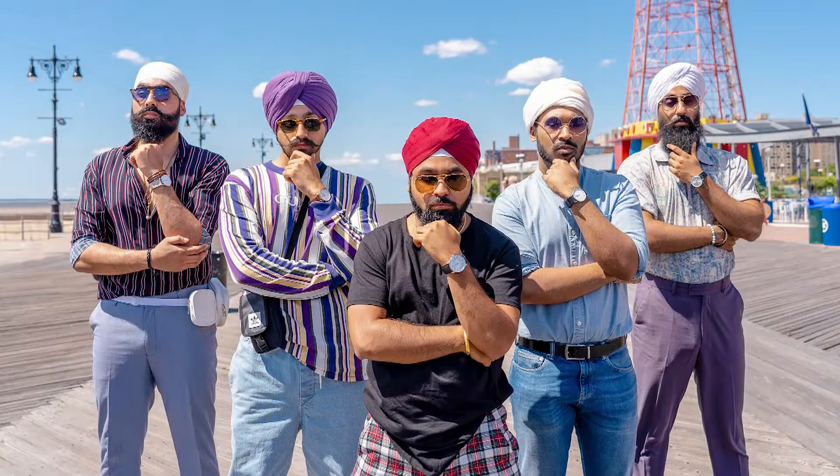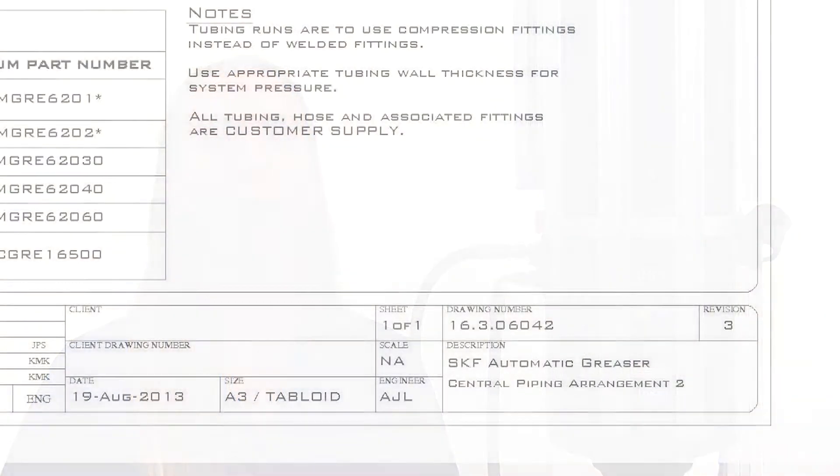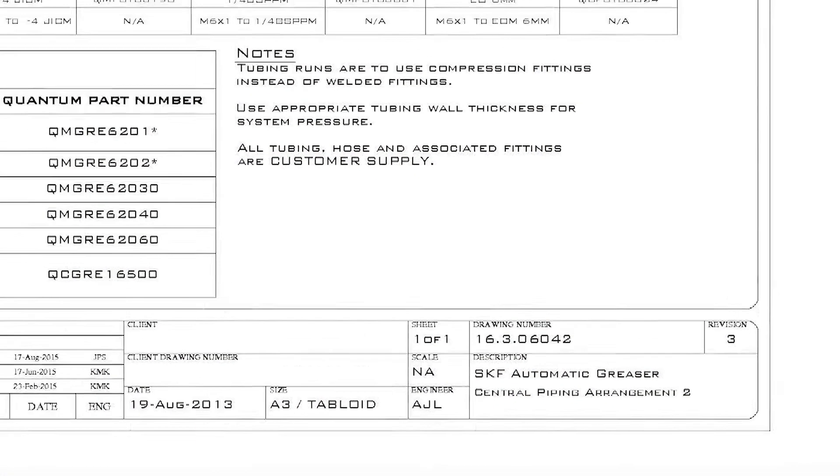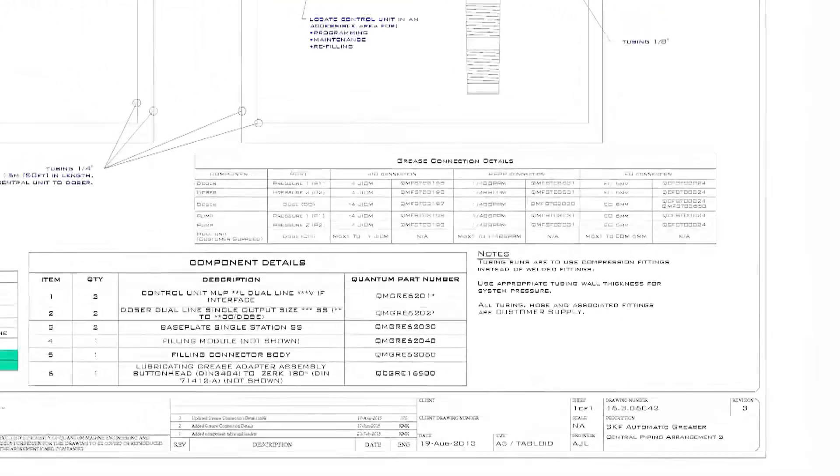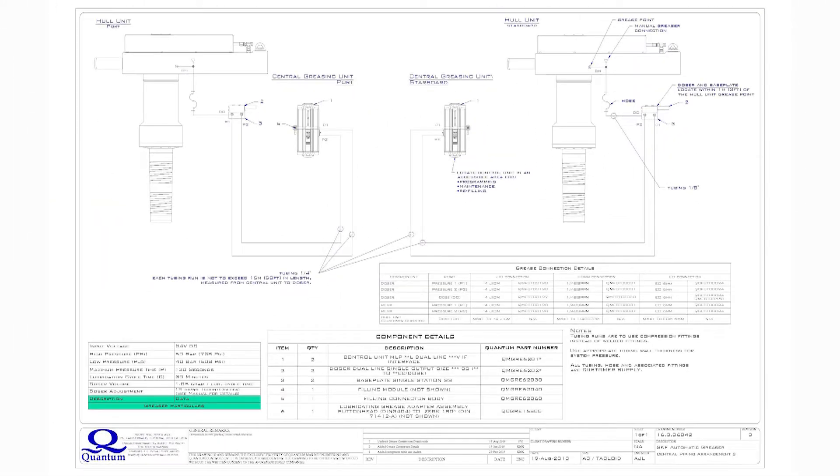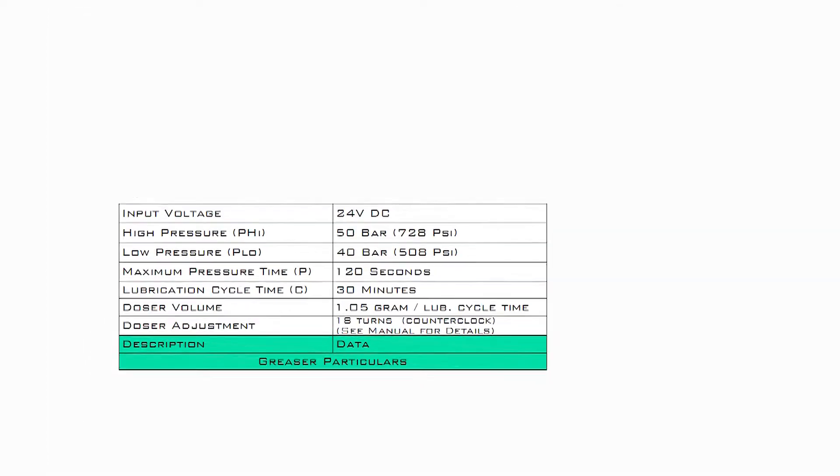Before adjusting any parameters, it is good practice to locate the prescribed set points provided by Quantum's engineering department. If Quantum supplied the automatic greaser for the boat, then you should find an auto-greaser central piping arrangement drawing in the drawing package that Quantum supplied. In this drawing is a table which indicates the auto-greaser parameter set points.